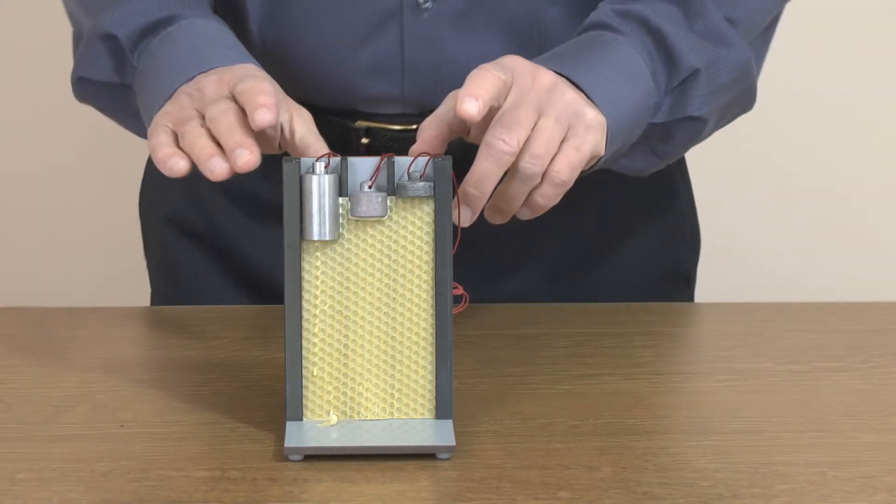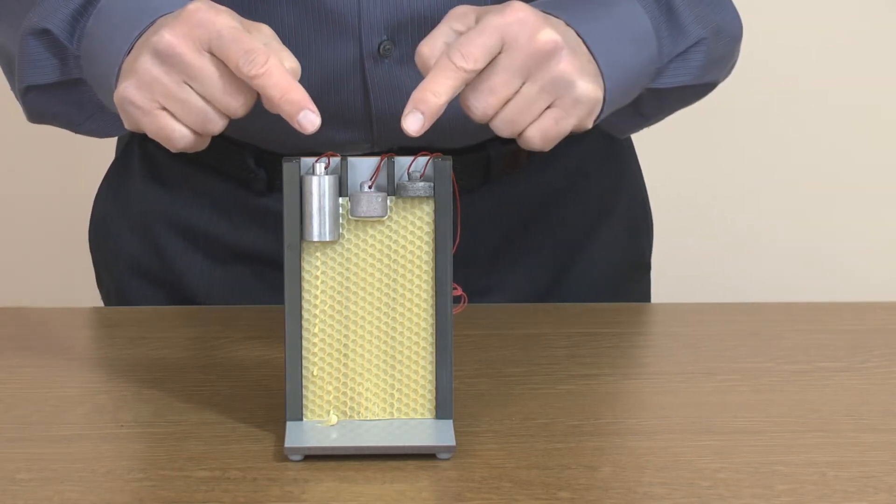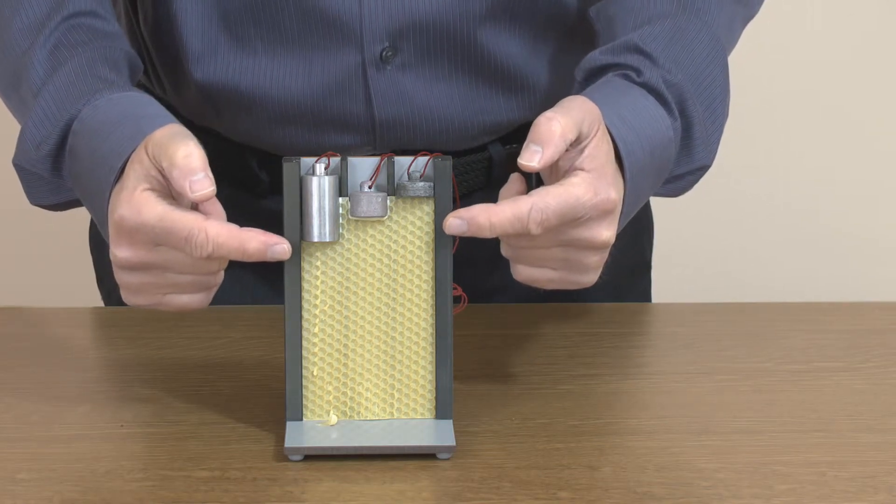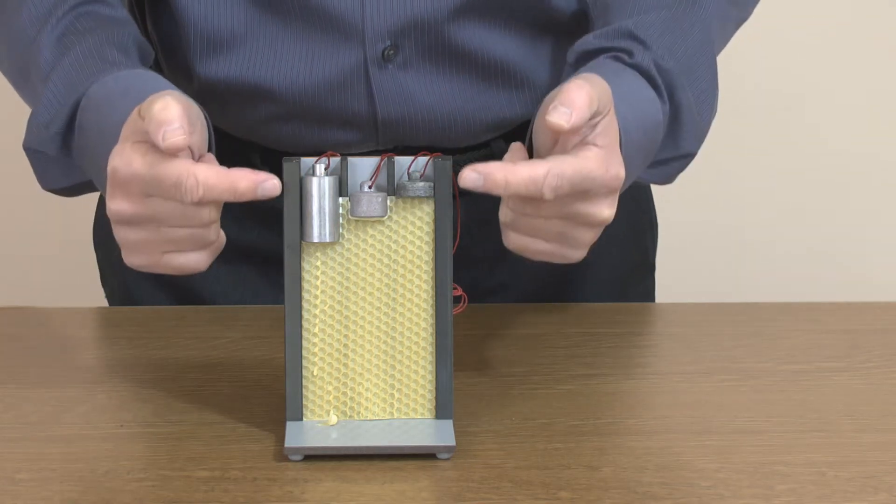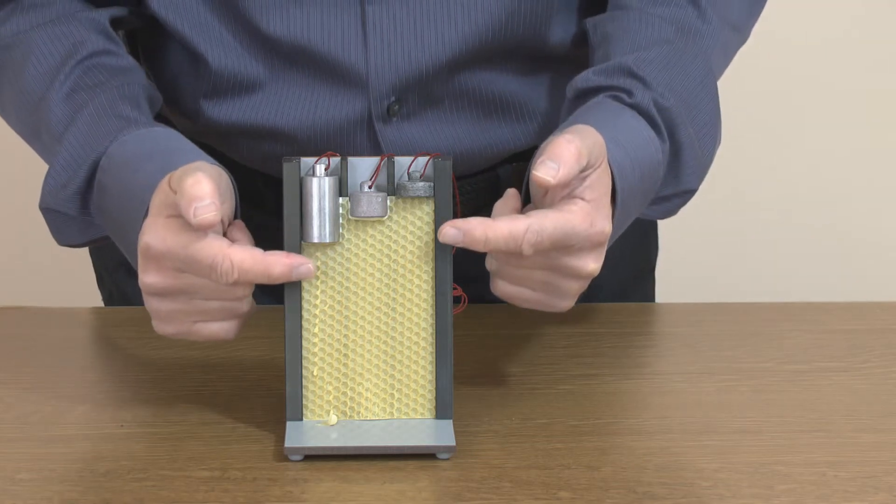We've left this for a couple of minutes and you can see that these metals have sunk to different depths in the wax. Remember, they are all the same mass, same cross-sectional area, same temperature, but they sunk to different depths in the wax.